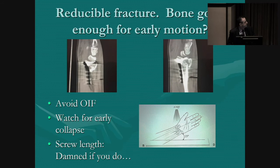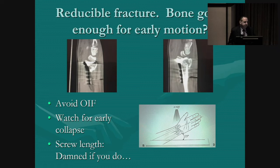Is the bone quality good enough for early motion? You want to avoid doing what's called an OIF — an open internal fixation. You have to make sure the screws are not in the joint when you leave the operating room. They can be very close if the distal articular fragments are small. If the bone is soft, the distal screws can go through the articular fragments almost like a cheese cutter and end up in the joint. You have to watch carefully for early collapse. It would be nice to capture dorsal fragments, but you risk extensor tendon irritation — you're sometimes damned if you do and damned if you don't.